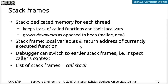When using a debugger, you usually have a command that lets you go up and down through the stack to earlier call frames and look at the variables used there — essentially what context the caller is providing. The list of all these stack frames is the current call stack, which represents the path of execution the program has taken up to a specific point by calling various methods.